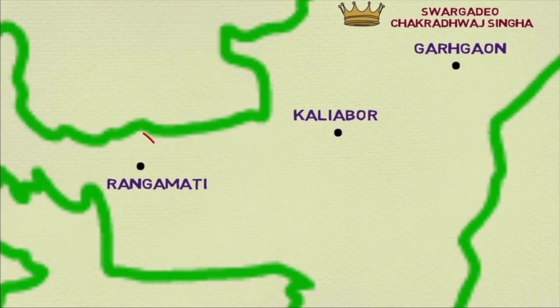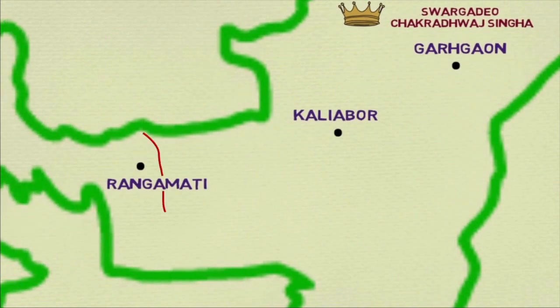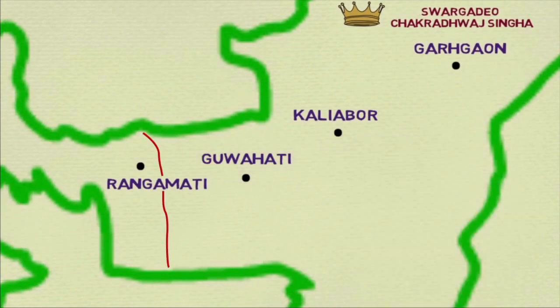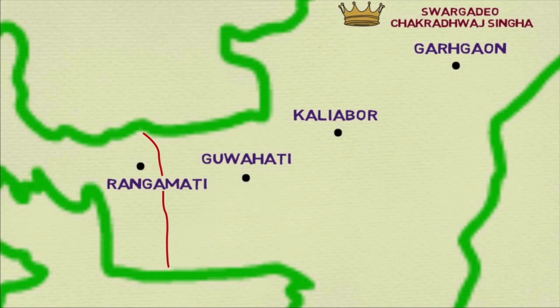Even though the Ahom territory extended up to the Manoh River, Guwahati was the most defensible location, and so the Ahoms decided to make their last stand there. That is why Aton Buraguhain and Lachit Borphukan had their headquarters for the campaign in Guwahati. I will go into the reasons why Guwahati was a favorable defensive point a little later. For now, let me outline the command structure of the Ahom forces.